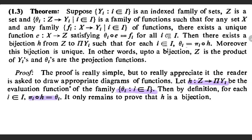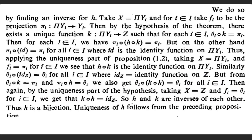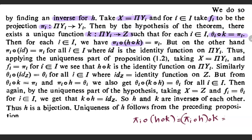To prove this result, let h from z to product yi be the evaluation function of the family {theta_i} where i element of capital I. Then by definition, for each i element of capital I, pi_i composition h is equal to theta_i, using the characterization of the evaluation function. Now it remains to show that h is a bijection. We prove that h is a bijection by showing that there exists an inverse function for h. We assume that x is equal to product yi and we take fi to be the projection function pi_i. Then by hypothesis of this theorem, there exists a unique function k from product yi to z such that theta_i composition k equals pi_i for each i element of capital I. Then pi_i composition h composition k equals theta_i composition k, which equals pi_i.